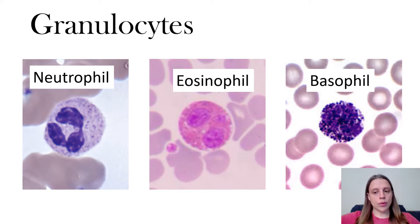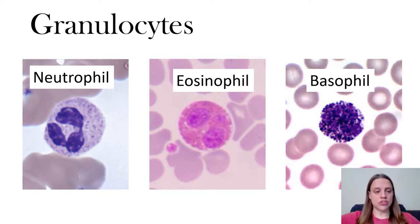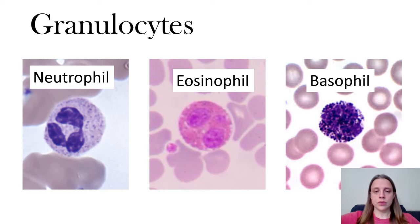Sometimes if the slides are very faded from being under the light for too long, you'll have a hard time deciding if it's red or not. In that case you want to look at the nucleus. In the neutrophil you can see there are three irregularly shaped balls that form the nucleus — neutrophils usually have a multi-lobed, kind of crazy nucleus.